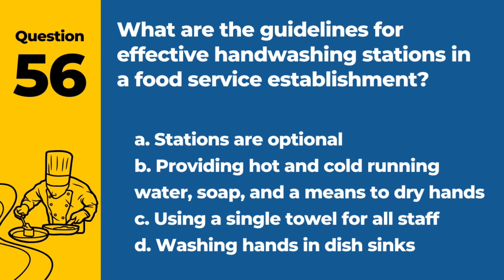Question 56. What are the guidelines for effective hand-washing stations in a food service establishment? A. Stations are optional. B. Providing hot and cold running water, soap, and a means to dry hands. C. Using a single towel for all staff. D. Washing hands in dish sinks. Answer: B. Providing hot and cold running water, soap, and a means to dry hands. Effective hand-washing stations in a food service establishment must provide hot and cold running water, soap, and a means to dry hands.